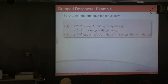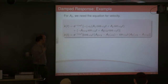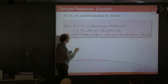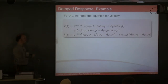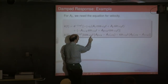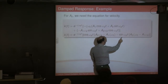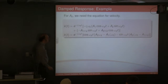But this time, to find A2 we need the velocity, so we have to take the derivative of this equation. As we saw in the tutorial two weeks ago, the derivative is a little bit complicated because you've got a function of two functions of time, so you have to use the product rule and the chain rule. We end up with x-dot expressed as an exponential times cosine omega_d t and sine omega_d t terms.